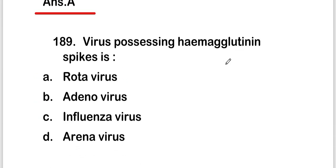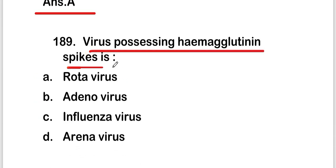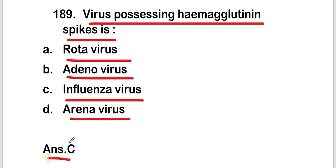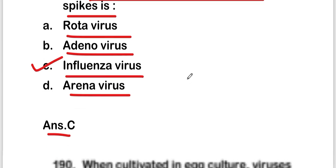The next question: which virus possesses the hemagglutinin spike? Options are: rotavirus, adenovirus, influenza virus, or adenovirus. The right answer is option C — influenza virus. The virus possessing the hemagglutinin spike is influenza virus.